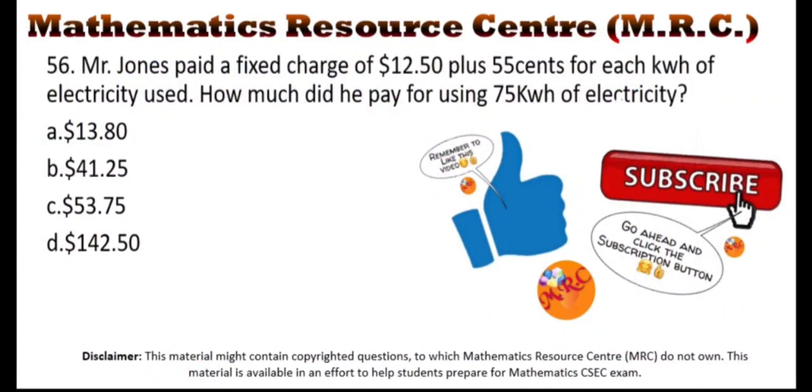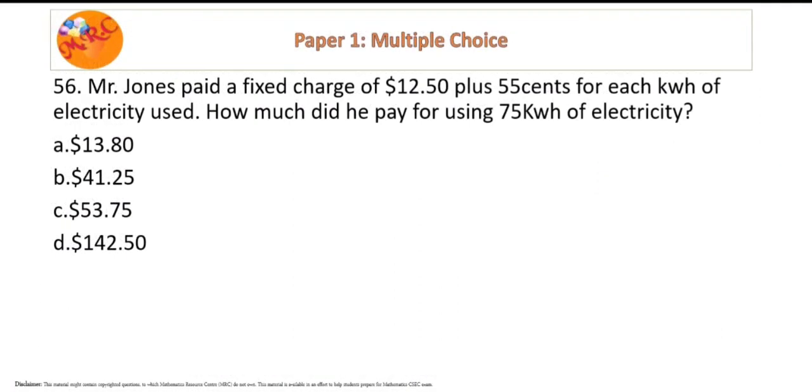Hello, hello, welcome to our channel Mathematics Resource Center. Pause the video, read through the question, and we are ready to begin. Mr. Jones paid a fixed charge of $12.50 plus 55 cents for each kilowatt of electricity used. How much did he pay for using 75 kilowatt of electricity?